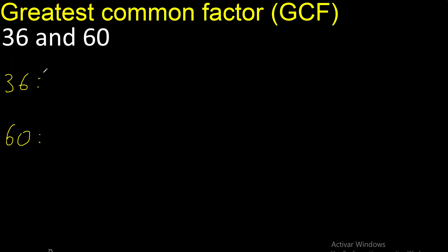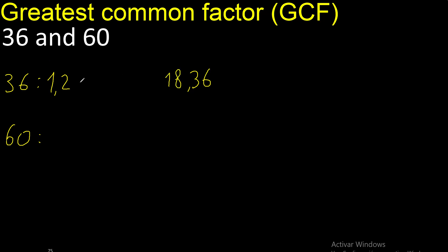Factors always start with 1. 36 divided by 1 is 36. Next, 2: divided by 2 is 18. Divided by 3 is 12. Divided by 4 is 9.